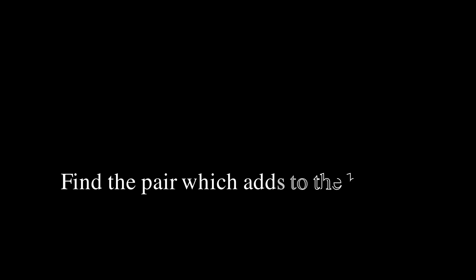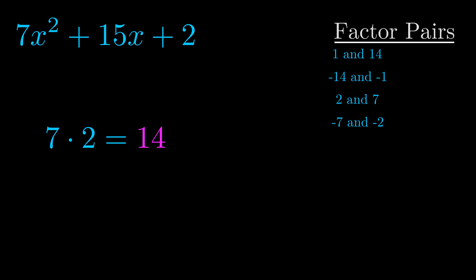The b value is the coefficient on the x term. That's the middle term, the one that we haven't done anything with yet. And really this is the only factor pair that we need.